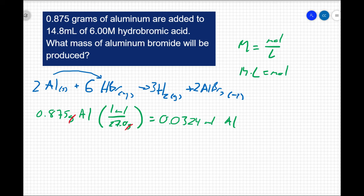So I can say I have 6.00 molar, 6.00 moles per liter, times, now I can't use 14.8 milliliters here. Because I have liters, I'm going to want that in liters, so I'm going to write this as 0.0148 liters. That way my units cancel out, and I'm left with 0.0888 moles of HBr.